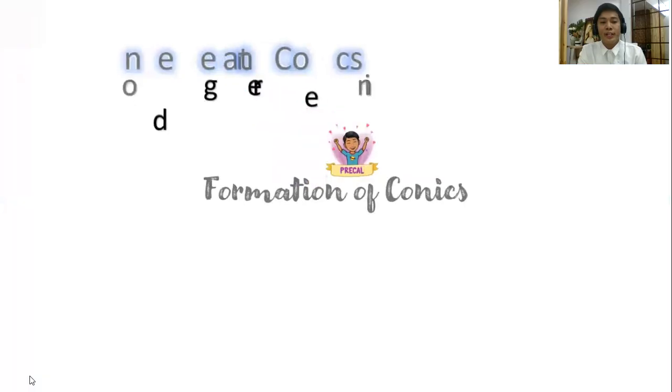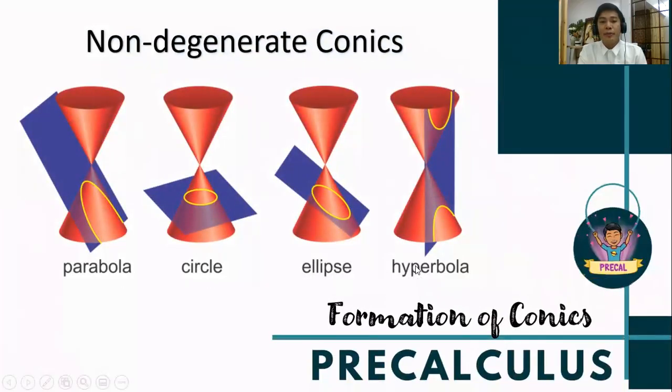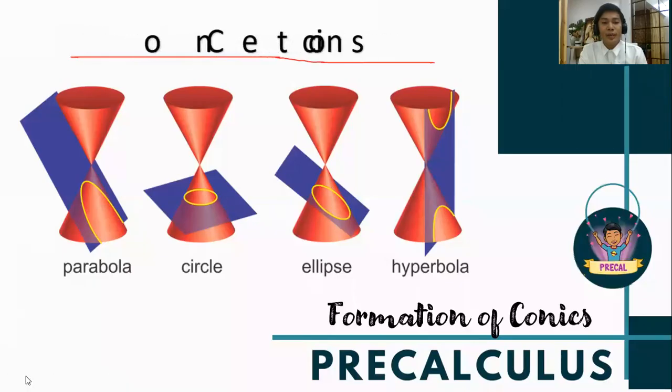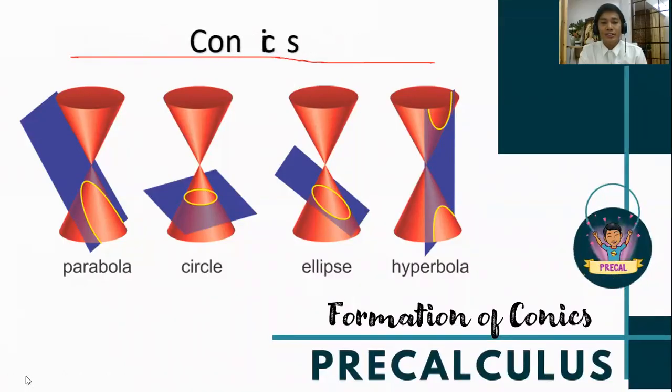If we have degenerate conics such as a point, line, and two intersecting lines, we will be referring to the parabola, the circle, the ellipse, and the hyperbola as non-degenerate conics. So that is the other term.